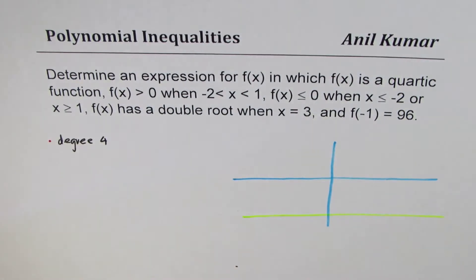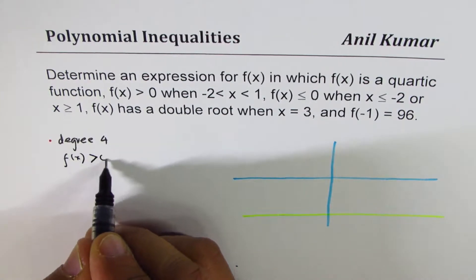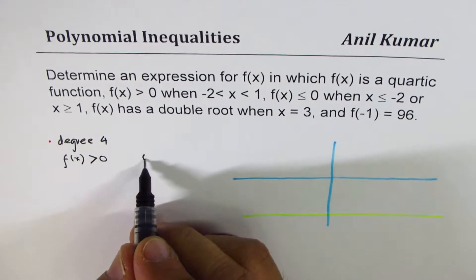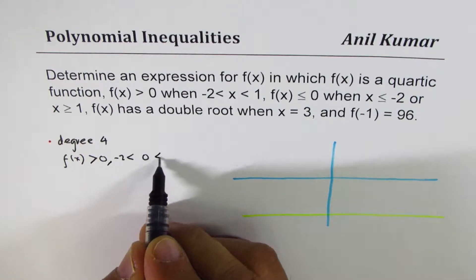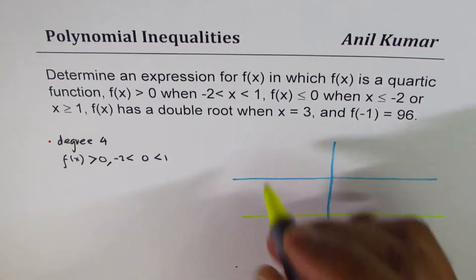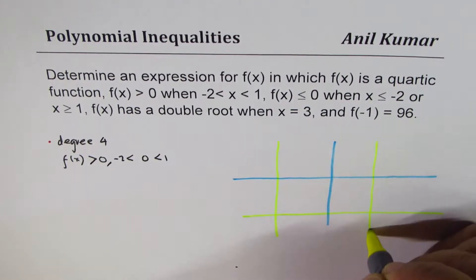And the second thing we have understood is f(x) is greater than 0 in the interval when x is between minus 2 and 1. So, okay. So, let's say this is minus 2 for us and this is 1. Right? This is 1.